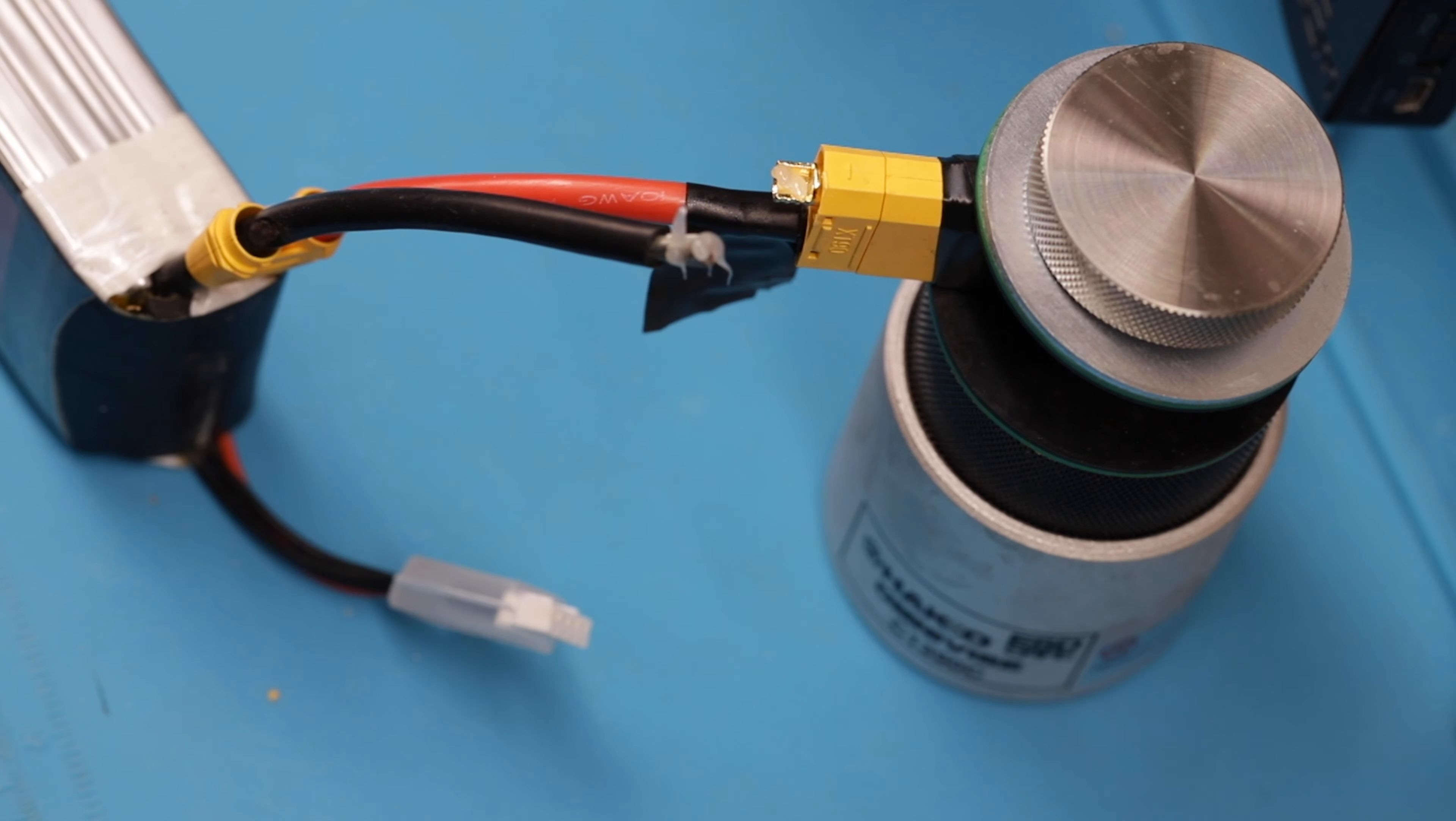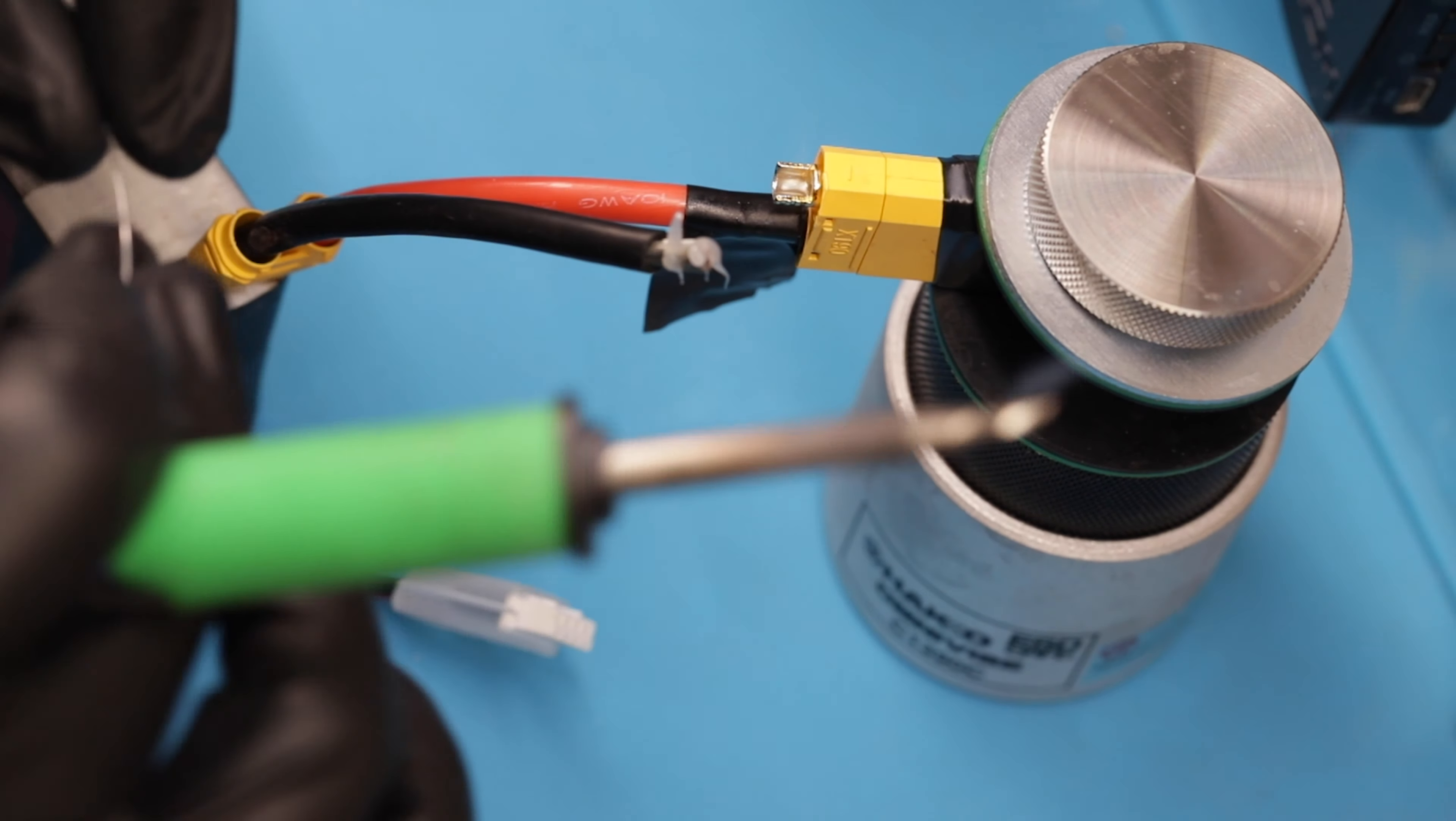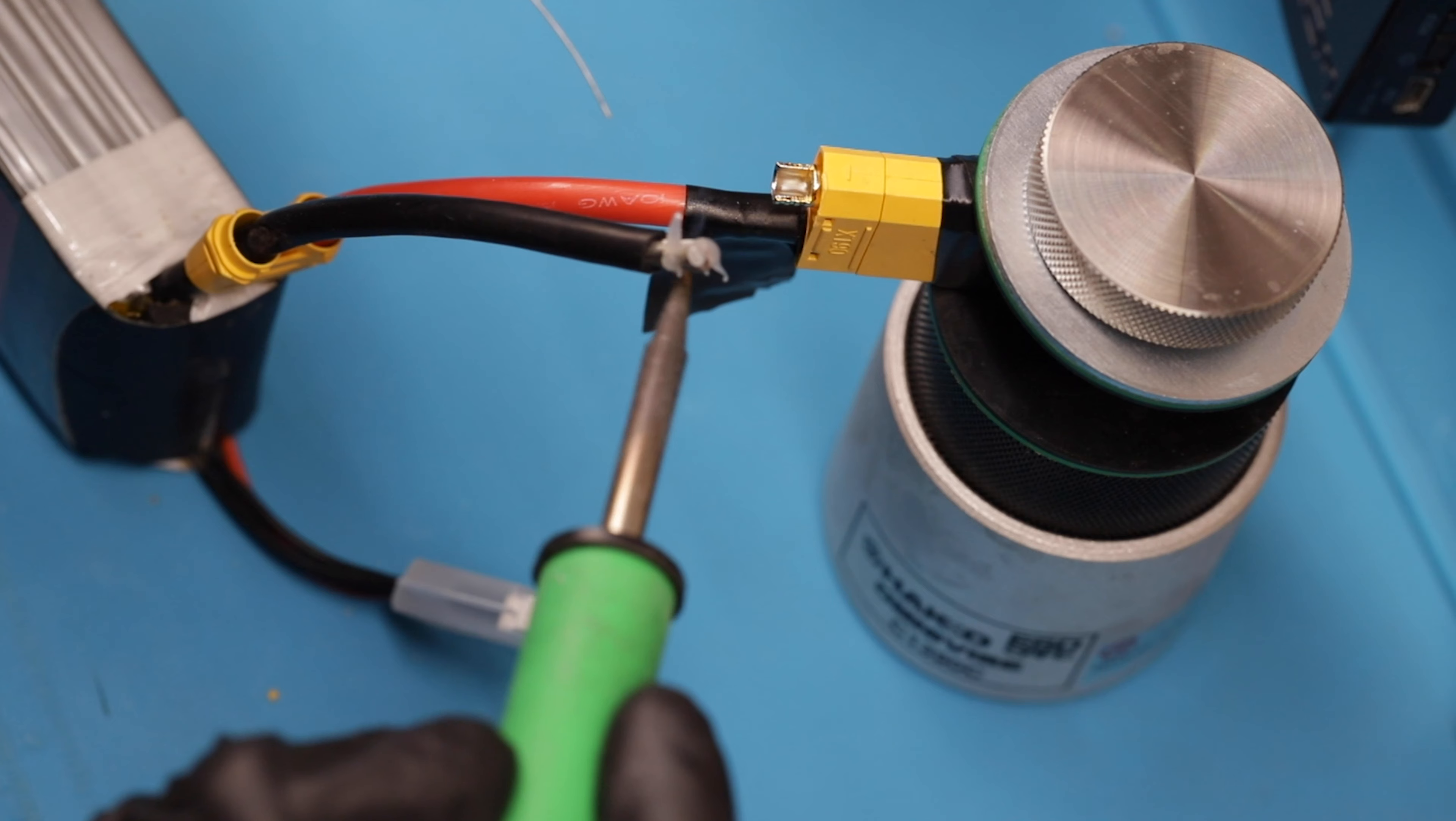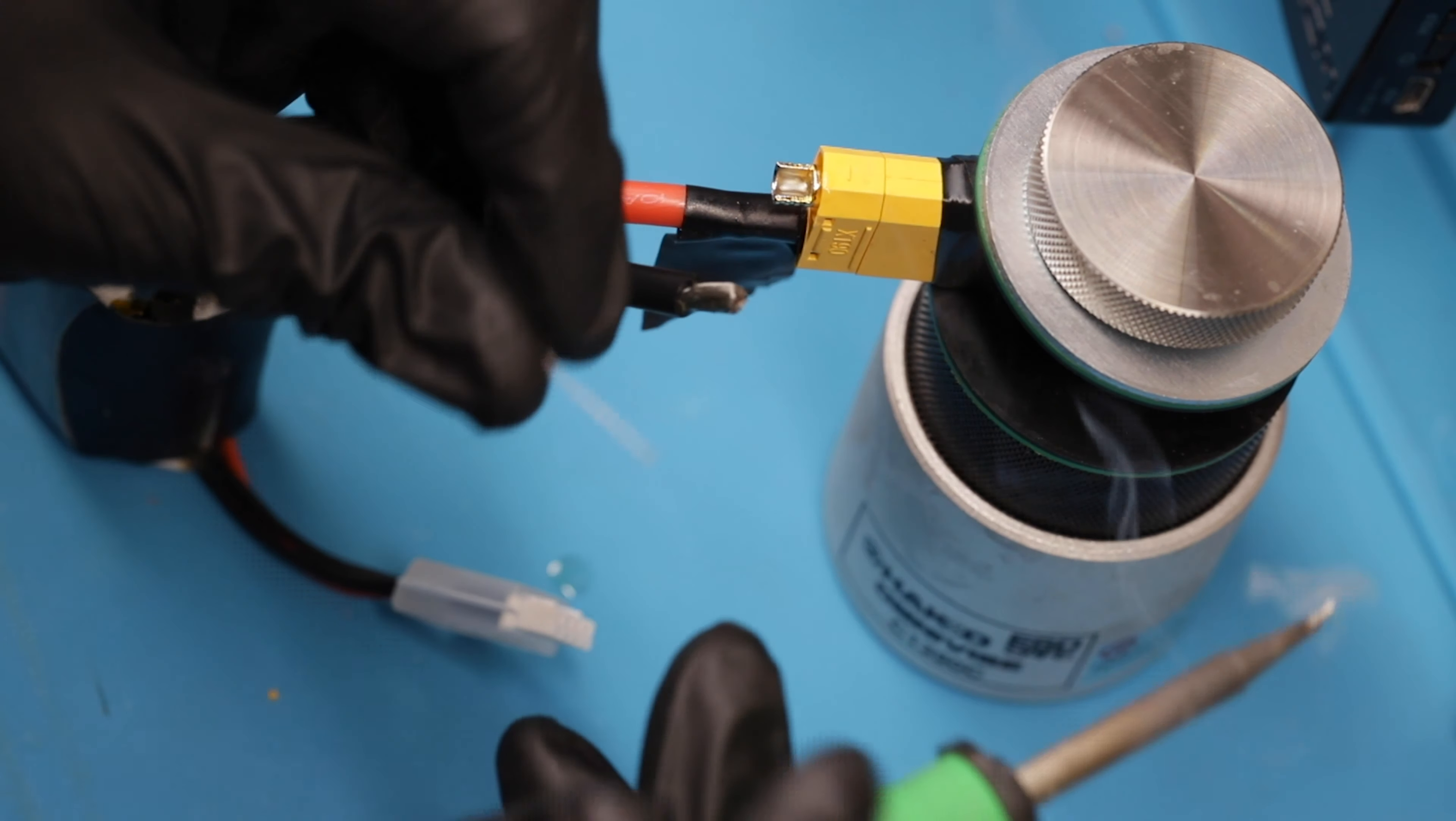And I'll turn on the fume extractor again so it'll get a little noisy. Prep the terminal. It looks good. It's taking the solder well. So there's no oxidation I have to worry about. And again I'm going to heat from the bottom of the cable and work that solder into it.